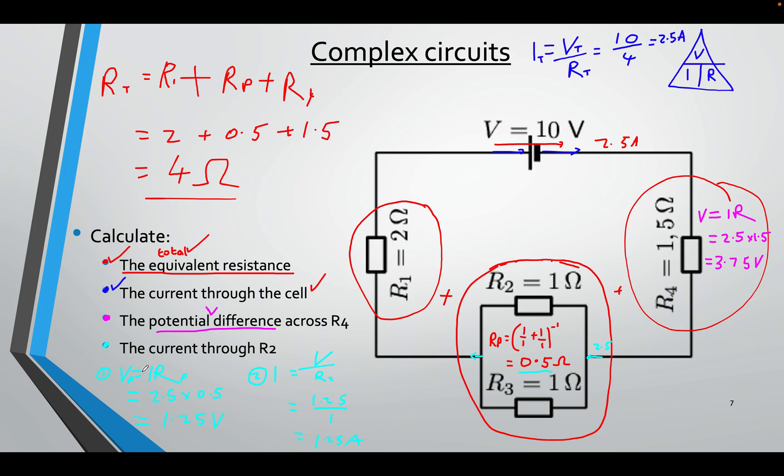V equals IR. I know I, 2.5. I know R. The total R was 0.5. So the voltage here and here, the same, is 1.25 volts.